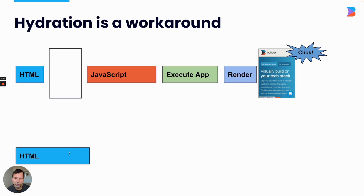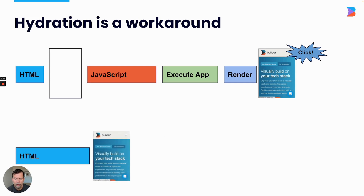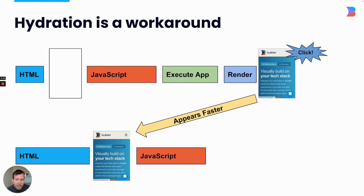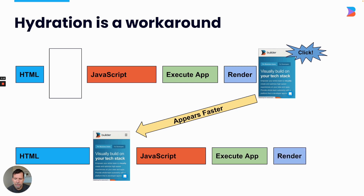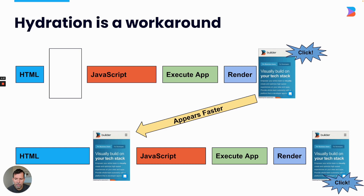So we decided to start doing pre-rendering. In the pre-rendering world, the HTML we send is actually bigger, so it takes longer to send, but we immediately show the website to the user. At this point the website is inert — you cannot click on it. So the page appears faster, but it's not interactive. The next step is we download the same exact JavaScript, execute it in the same exact way, and do the same exact rendering, which essentially just takes the DOM created by the HTML, throws it away, and replaces it with the DOM created by JavaScript.